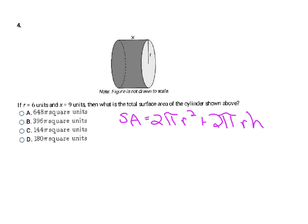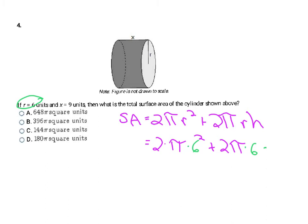Now I'm asked to find the surface area of a cylinder. The easiest approach is to use the formula. Since all the answer choices include pi, I won't substitute 3.14 — I'll just carry pi through. So I have 2 times pi times r squared plus 2 times pi times r times h. My radius is 6 and height is 9. First: 2 times pi times 6 squared = 2 times pi times 36 = 72 pi.